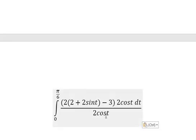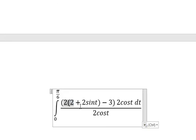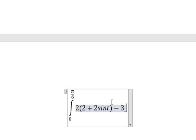2 cosine t divided by 2 cosine t, so we just have this one left: 1 plus 2 sine t minus 3/2.